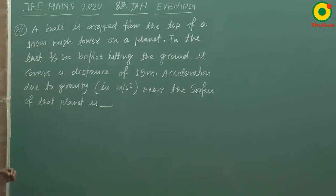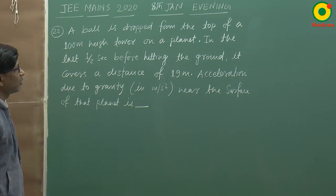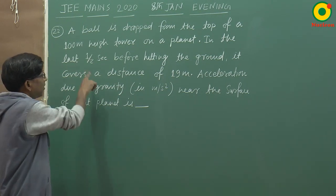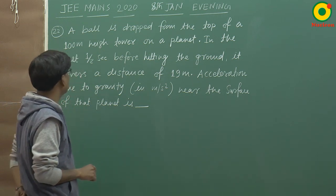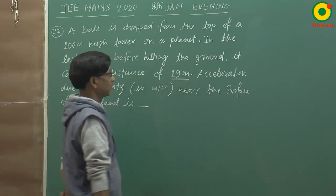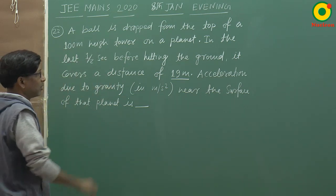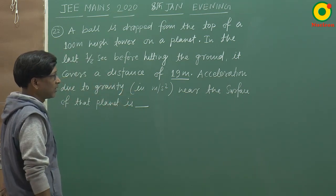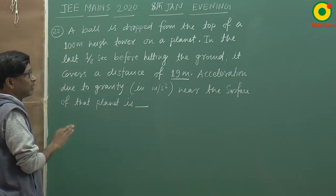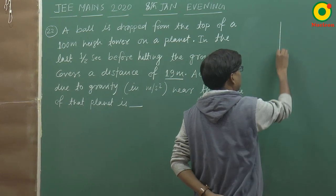A ball is dropped from the top of a 100 meter high tower on a planet. In the last half second before hitting the ground, it covers a distance of 19 meters. The acceleration due to gravity in meter per second square near the surface of that planet is — यह EDG type सवाल है।